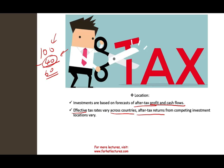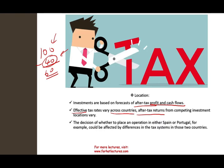For example, in the US, different states tax you differently. Some states have no income taxes; in some states it's as high as 12–15%. So the decision whether to operate in Spain or Portugal could be affected by differences in the tax system — that's how important location is.